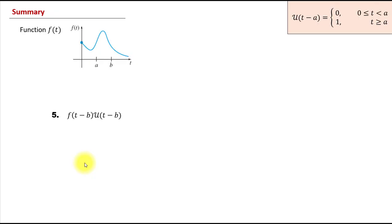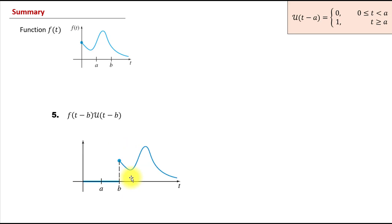Let's look at a few more examples. In Example 5, we have the translated function f(t-b) multiplied by the unit step function at b. The minus b next to t represents a horizontal shift — we take the function and shift it b units to the right. Being multiplied by the unit step function at b means it's turned on at b. As a result, function f first got translated b units to the right, and then turned on at b. From 0 to b it's just 0 because of the unit step function.